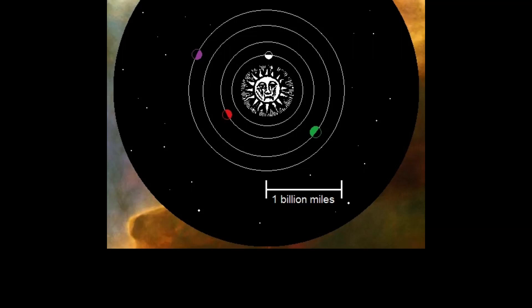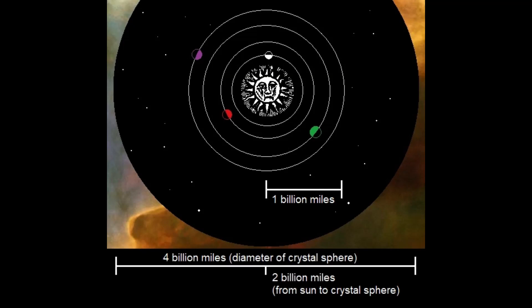Therefore, the crystal sphere would be at least 2 billion miles from the sun, and as a result would be at least 4 billion miles in diameter.